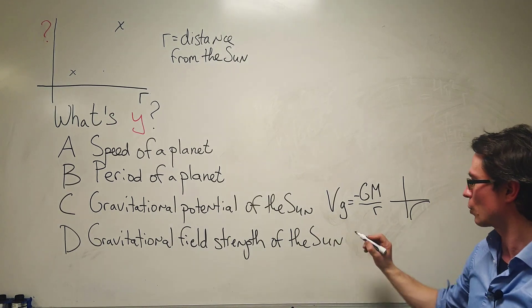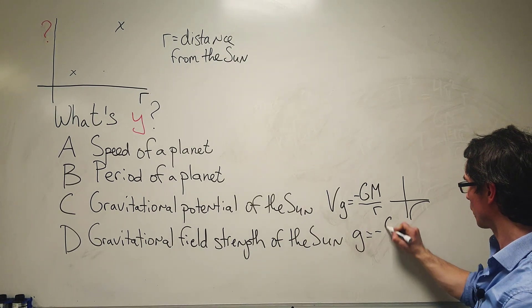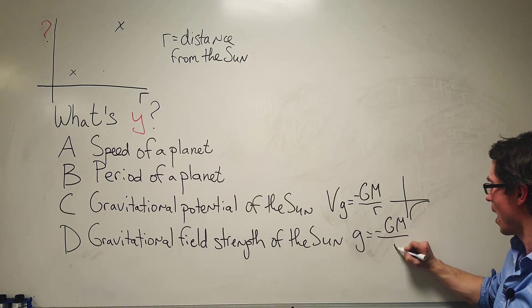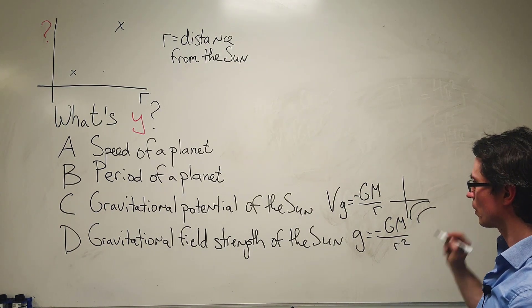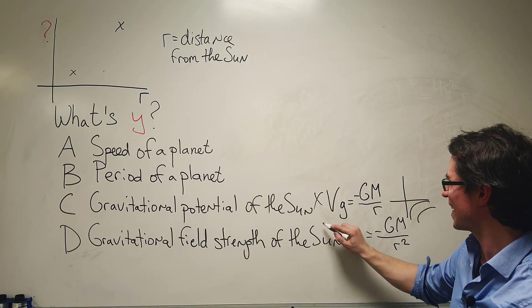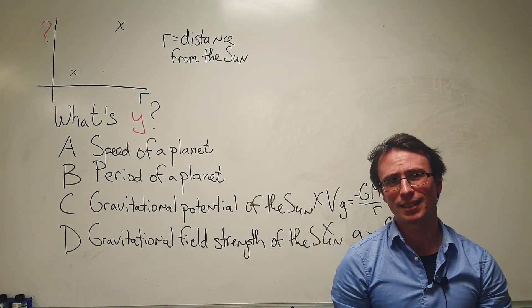And the gravitational field strength g will look in a similar way because that's just minus GM over r squared, which will look something closer to this. So it can't be C and it definitely cannot be D.